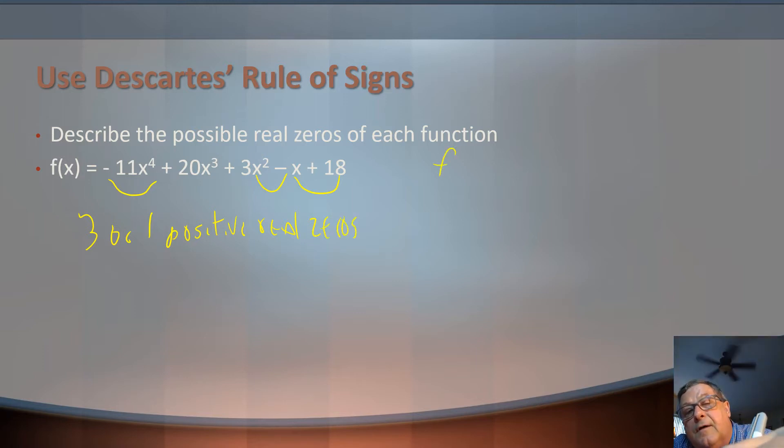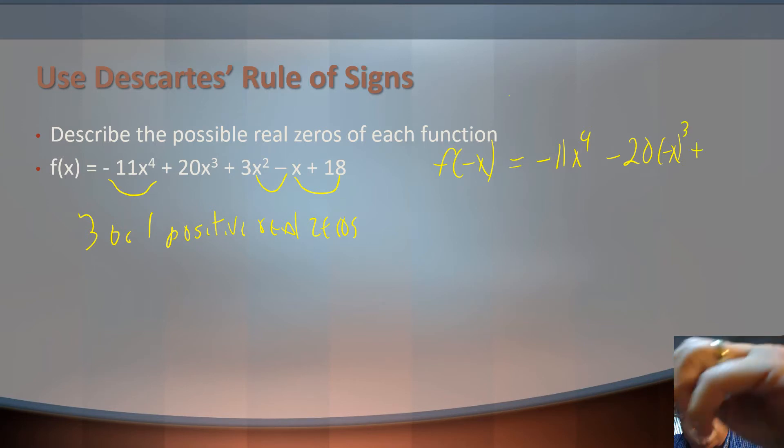What if we're looking at f of negative x? Remember, if I'm raising it to an even exponent, my sign from my original function is going to stay the same. This is going to remain the negative 11x to the 4th. But if I've got 20 times negative x cubed, that would change this sign to negative 20x cubed. Plus 3x squared is going to stay the same, it's going to stay positive.